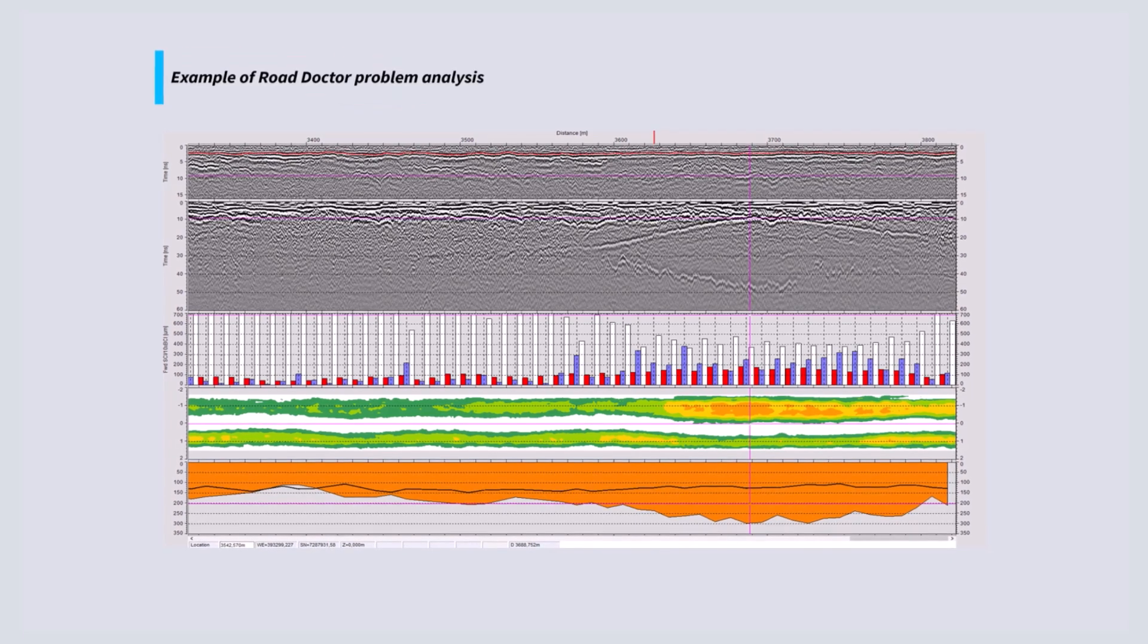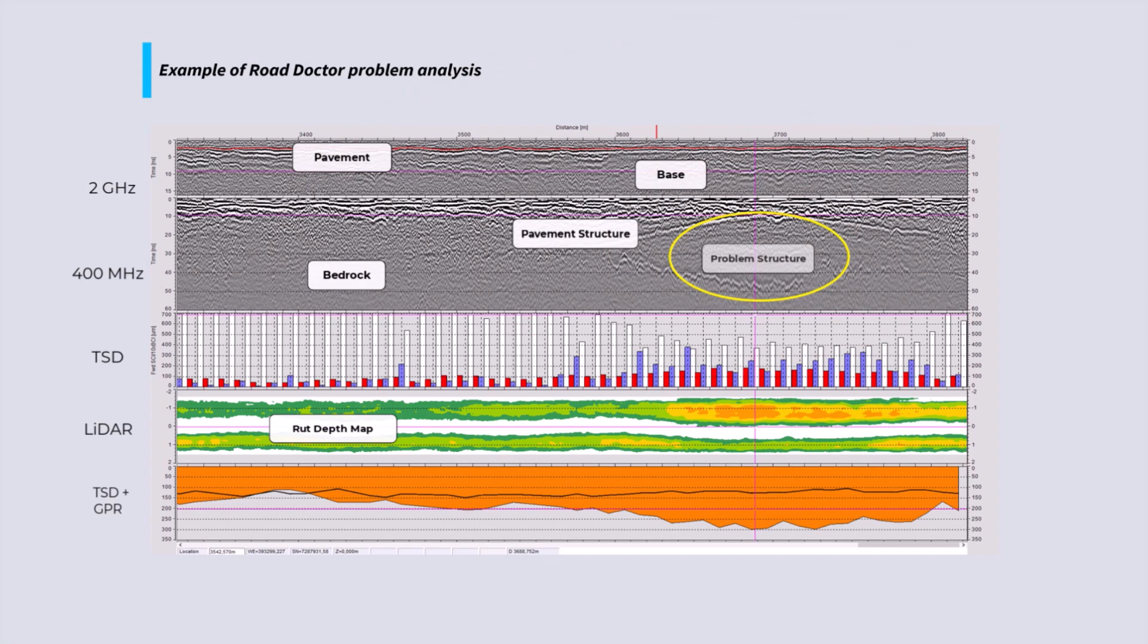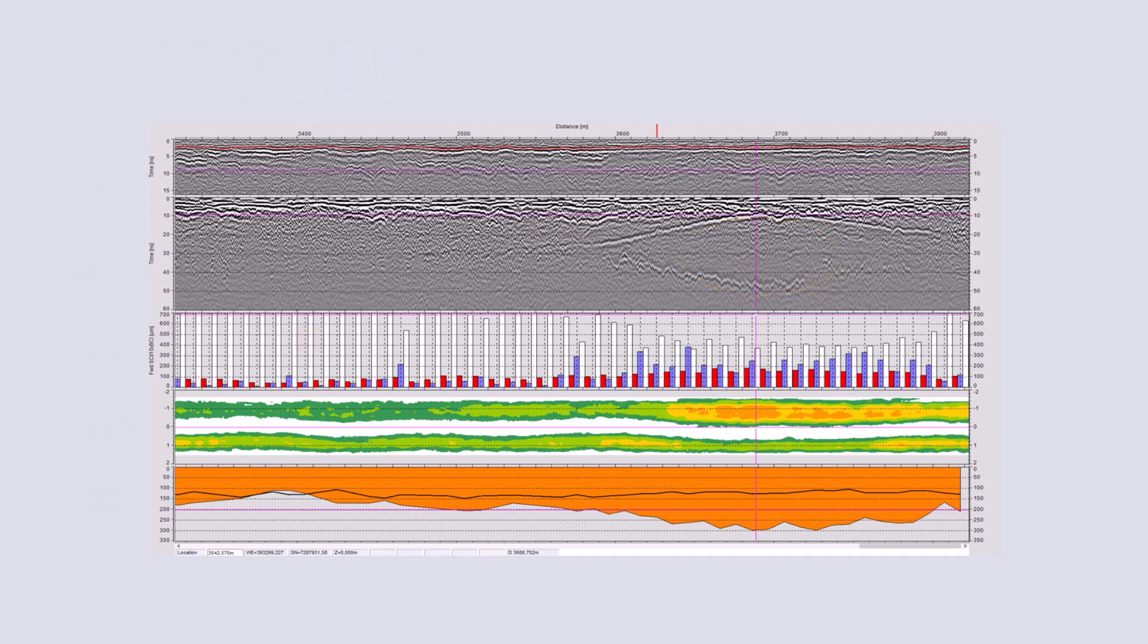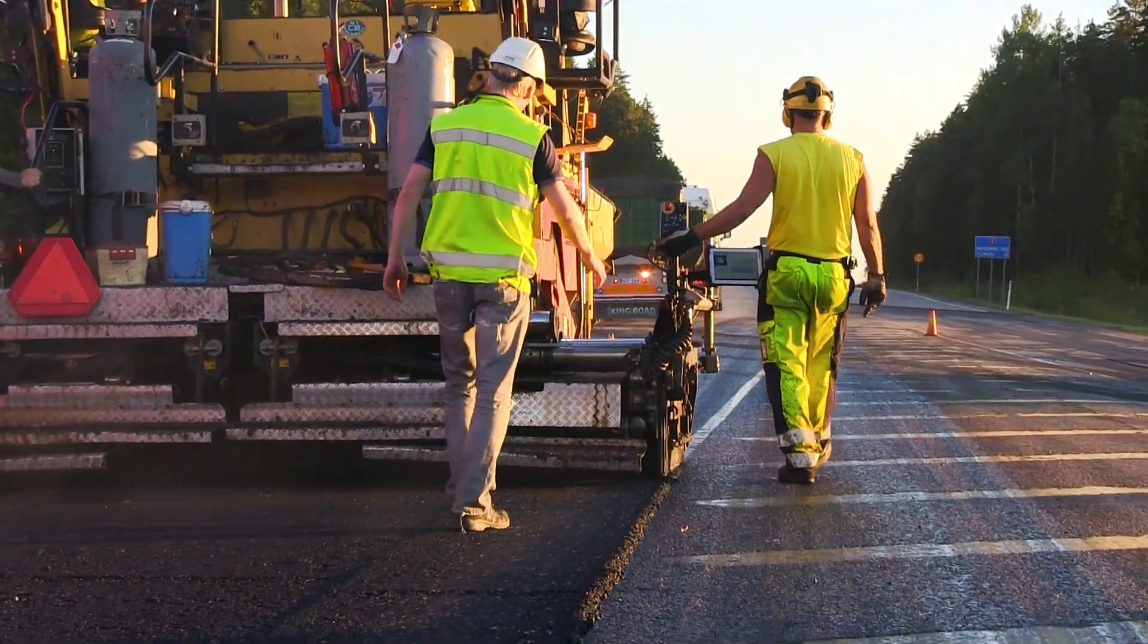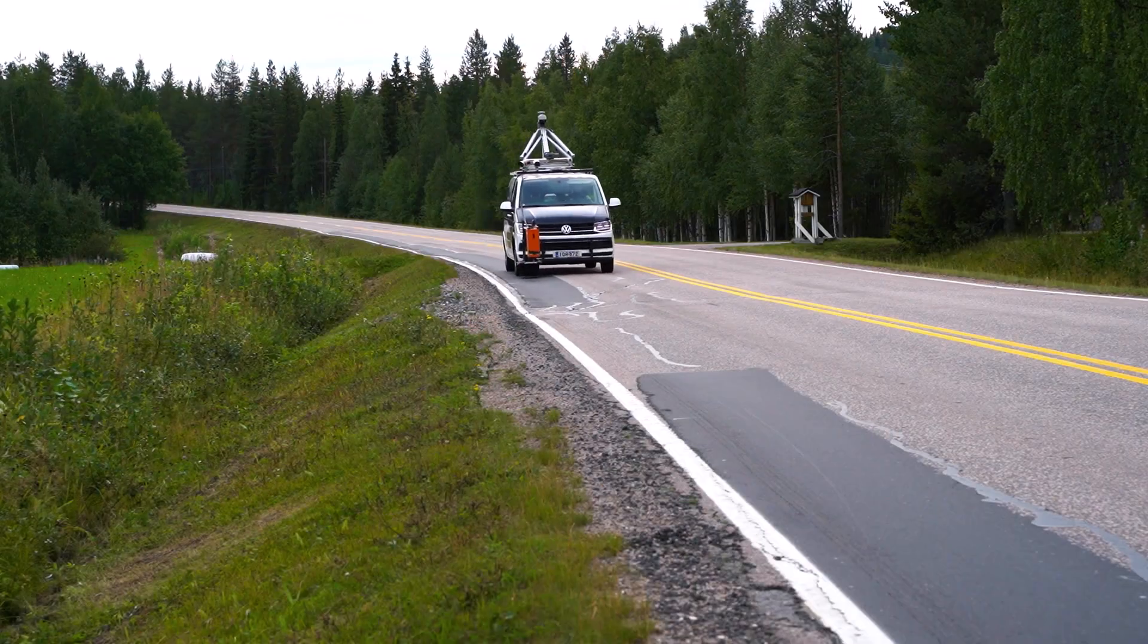By accurately pinpointing the locations and causes of pavement issues, integrated analysis helps in planning targeted maintenance and rehabilitation activities. This ensures that resources are used efficiently, reducing unnecessary repairs and optimizing budget allocation.